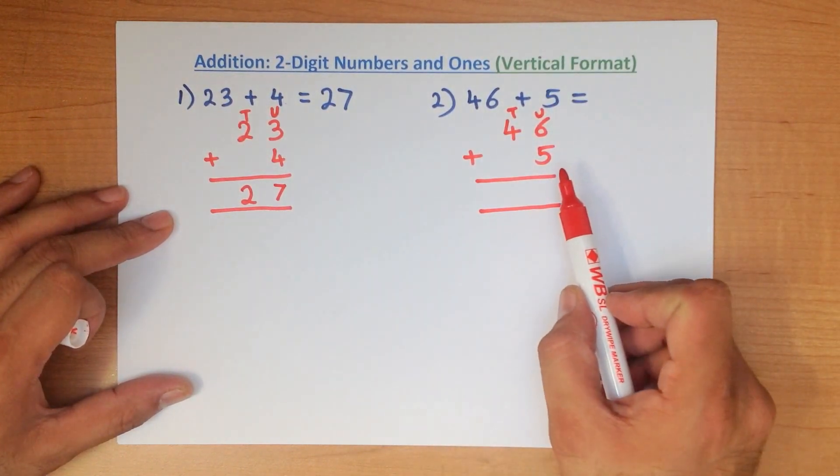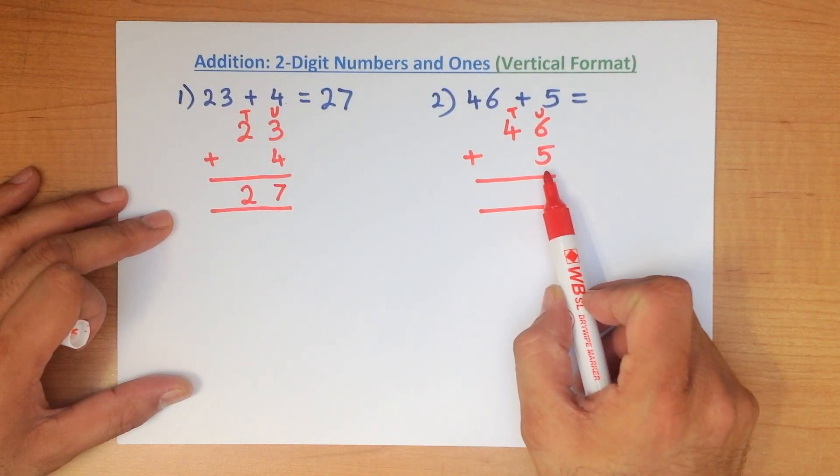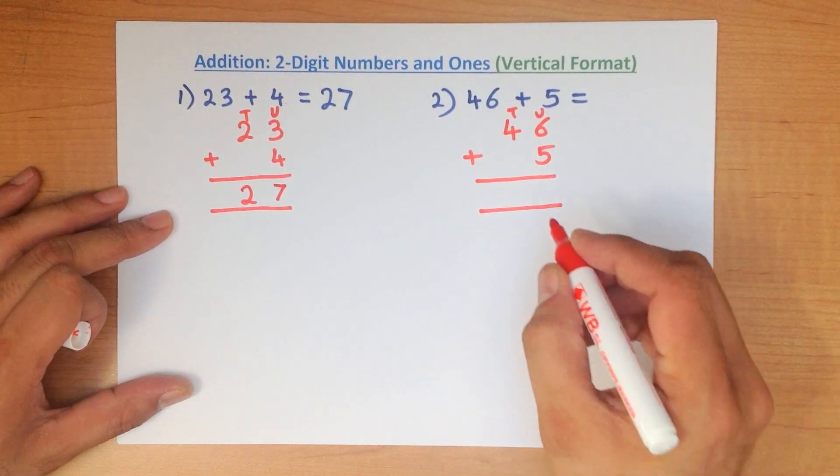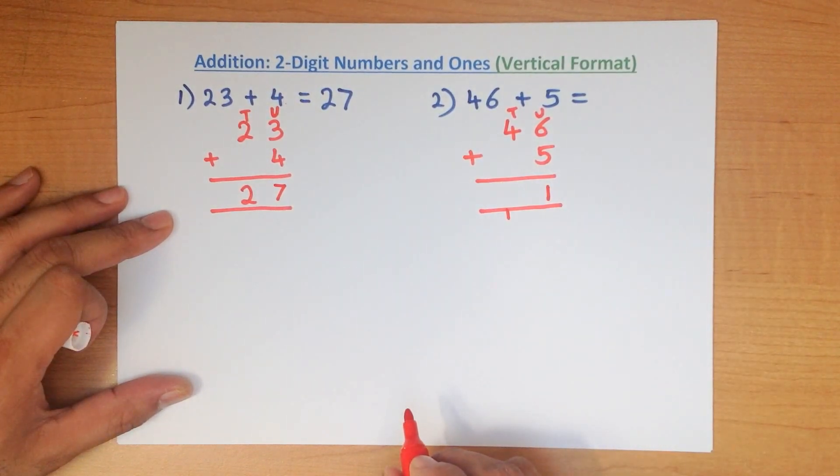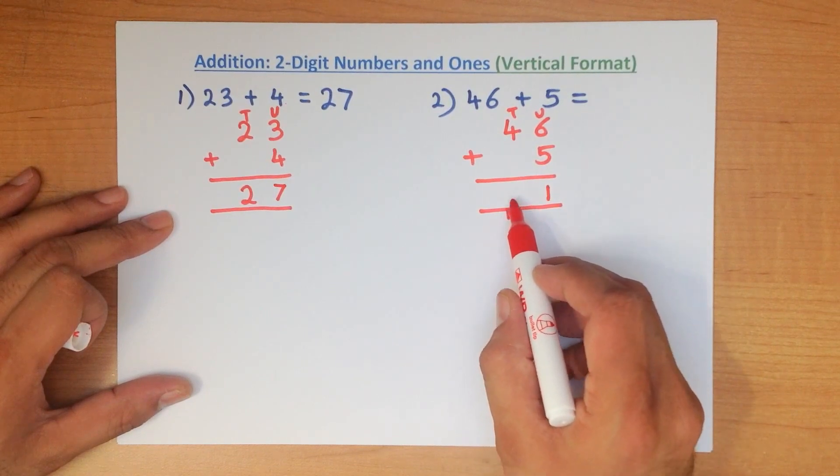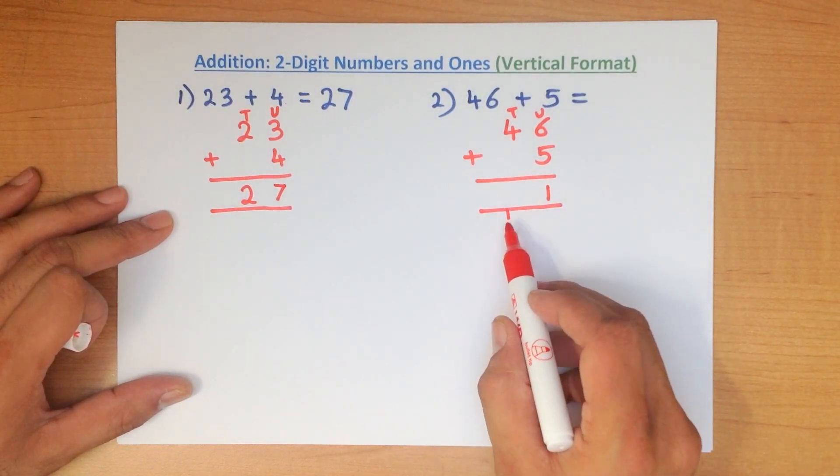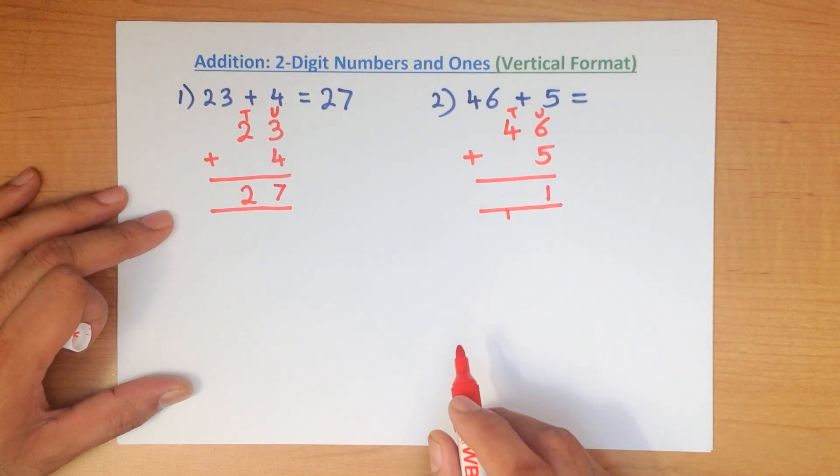So the first thing we do is we add the column on the right hand side. What is 6 plus 5? That's right, it is 11. This is how we write it down. 11. 1 is written here and becomes part of the tens column. This one over here remains in the units column.